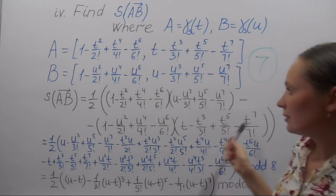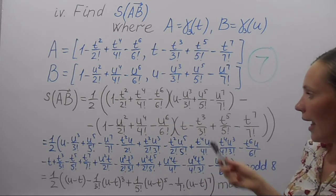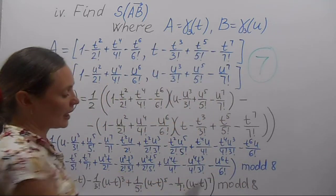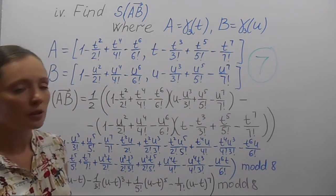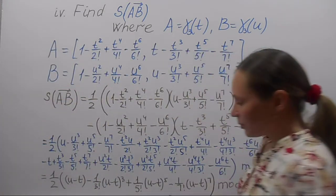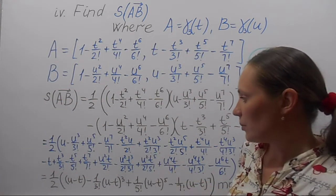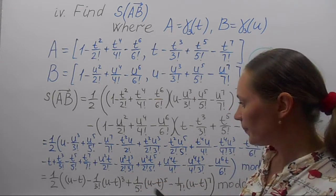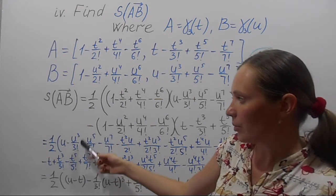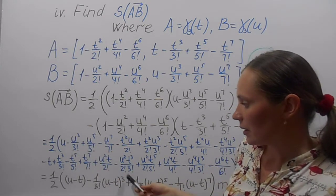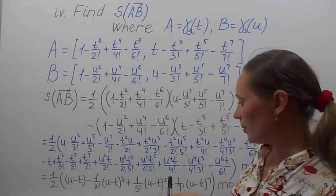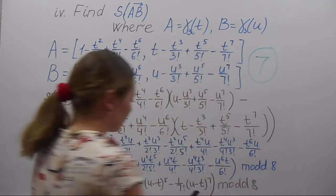We open the brackets and this expression is the same as a long expression mod d8, meaning we ignore all powers of 8 and more. One can see that this can be reduced to a compact expression: u−t appears, and the terms with power 3 can be gathered in a bracket (u−t) cubed, and similarly for power 5 and power 7.